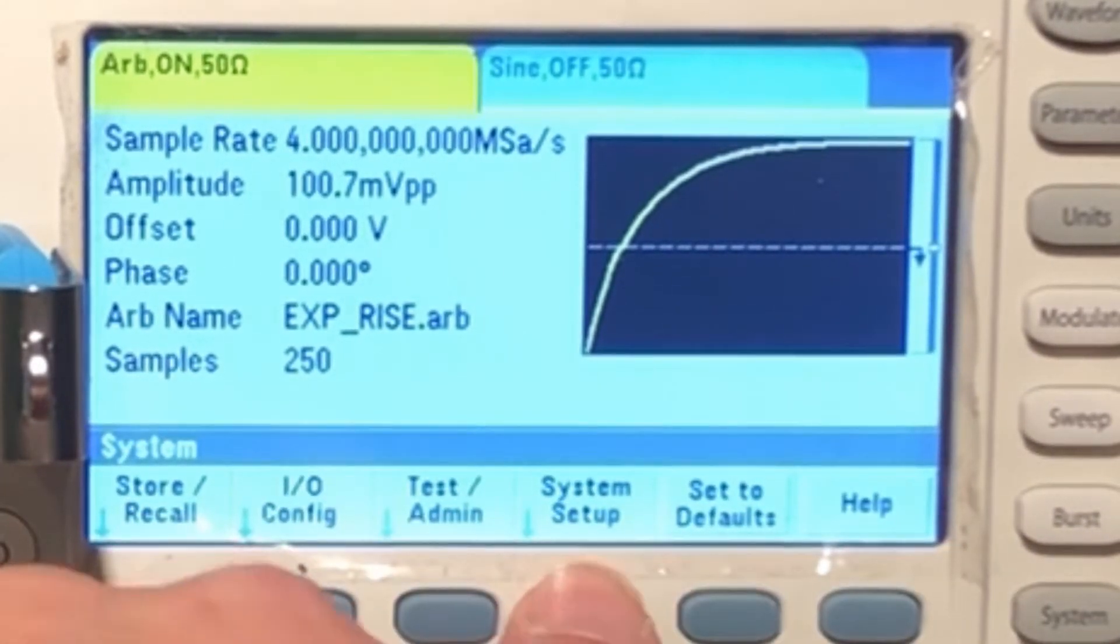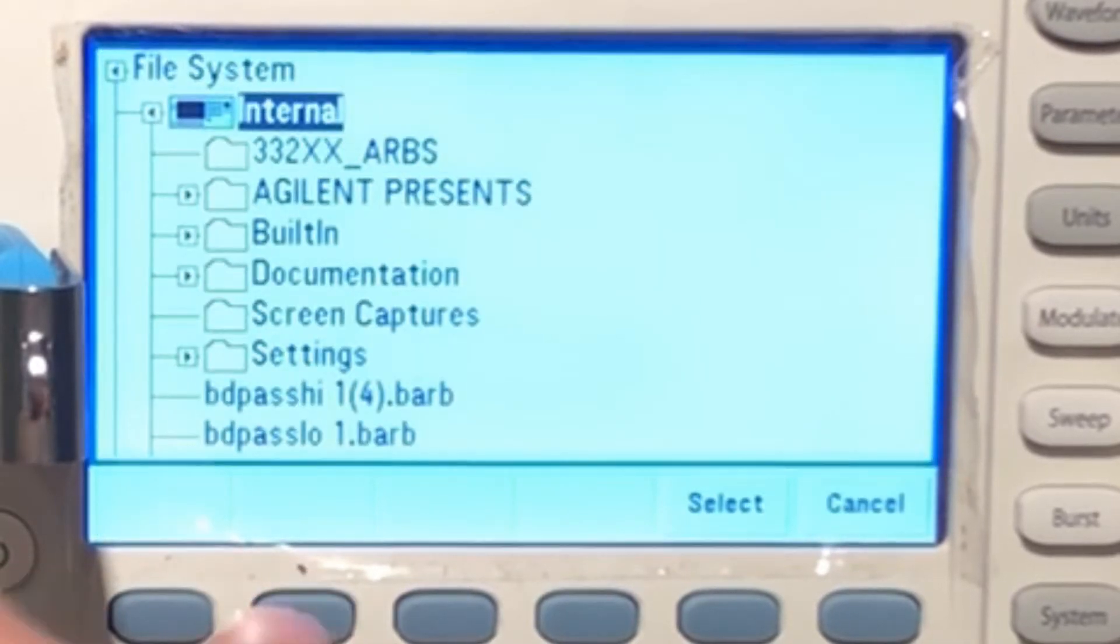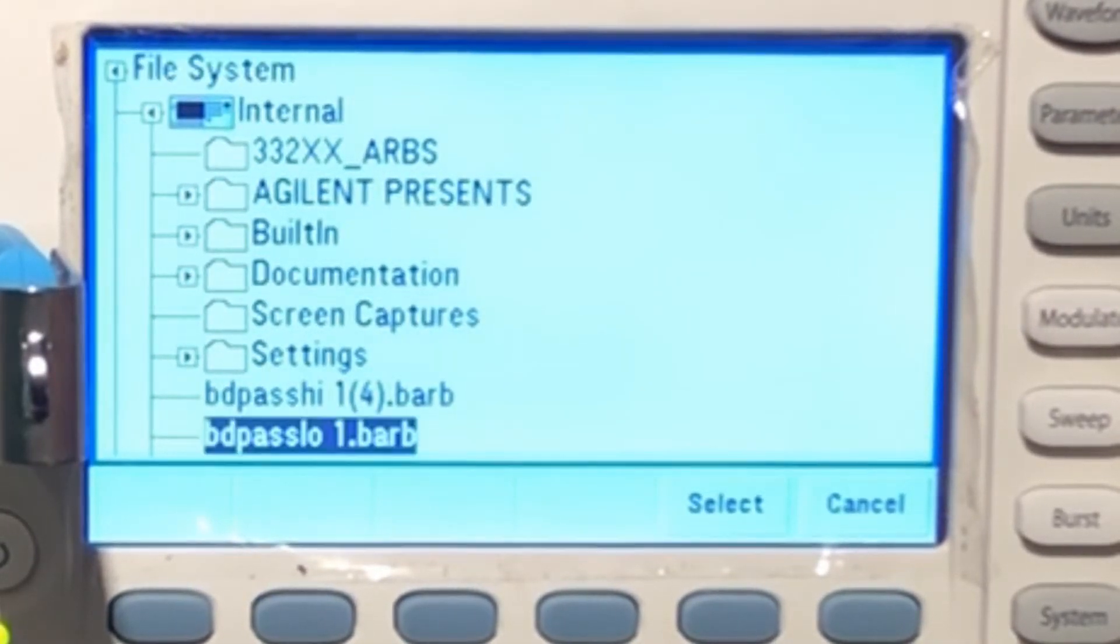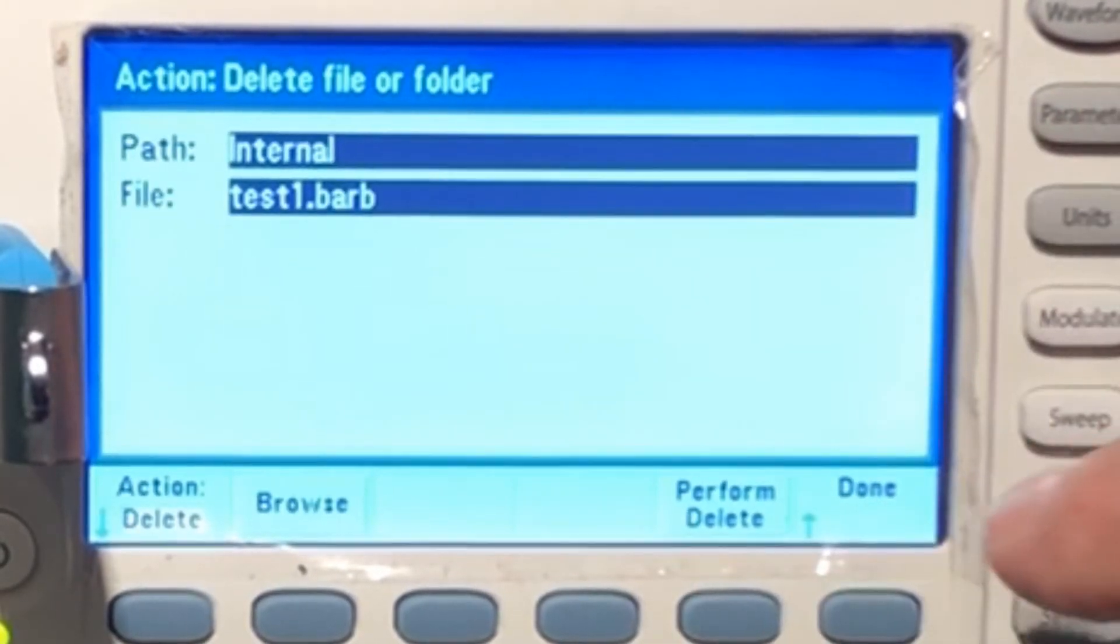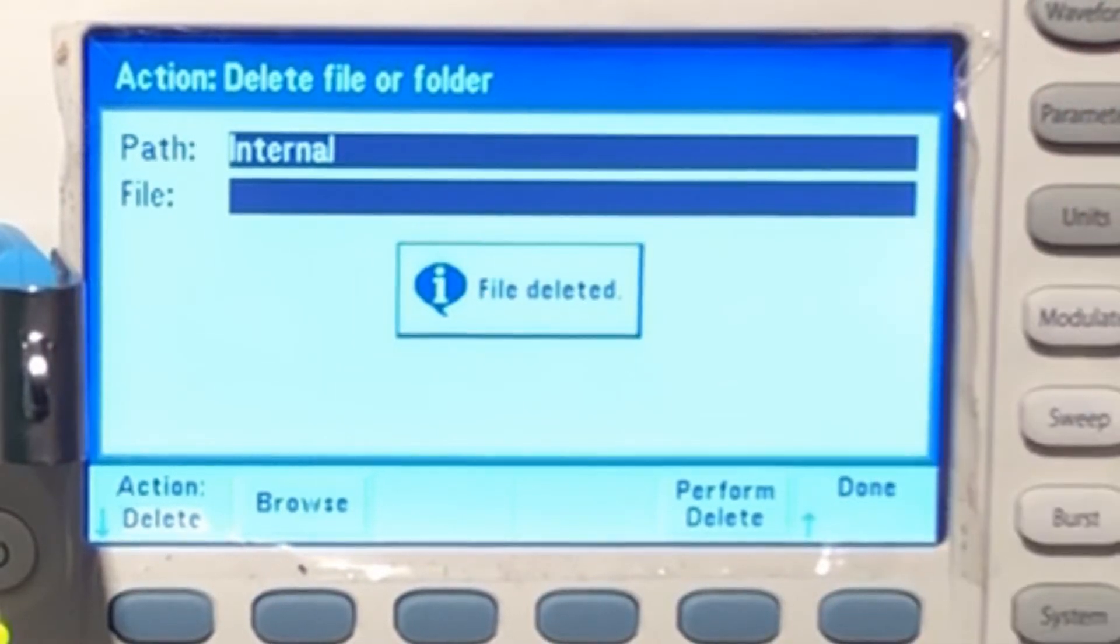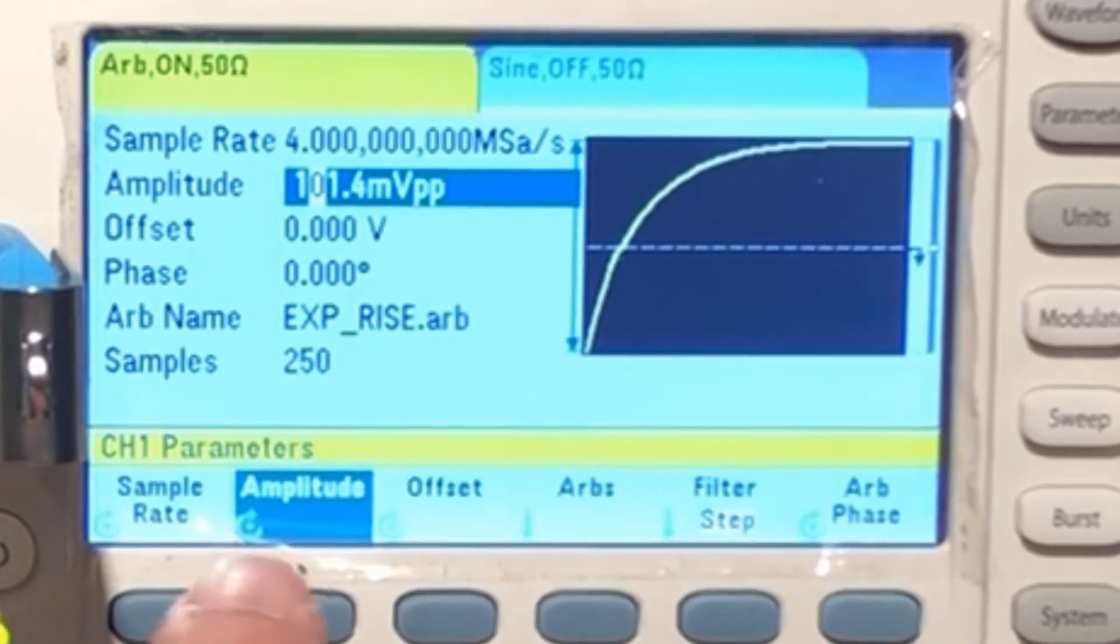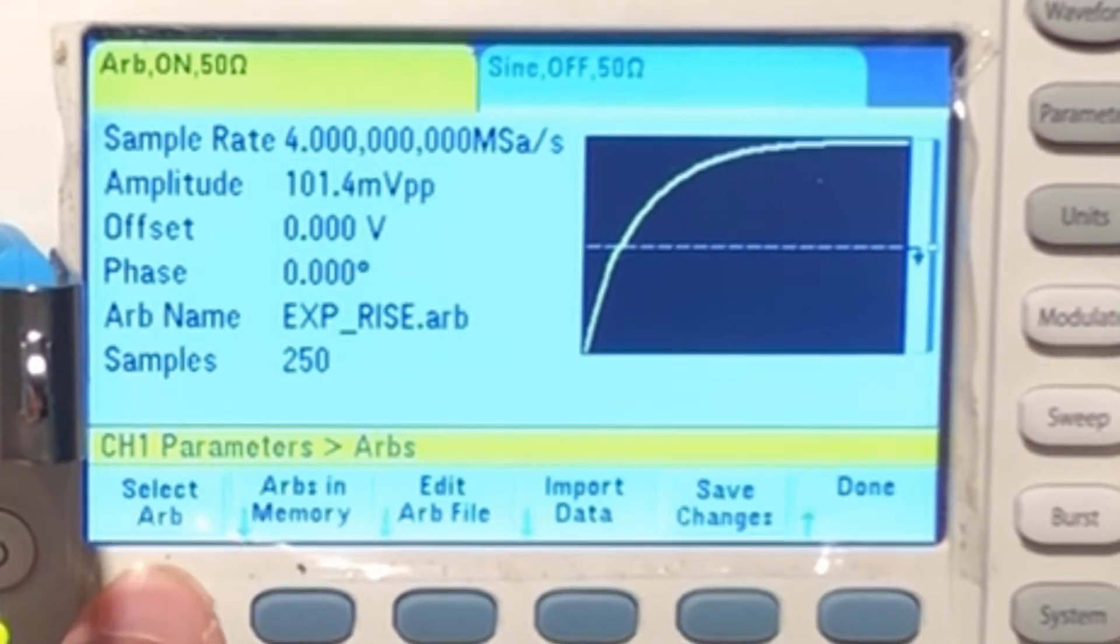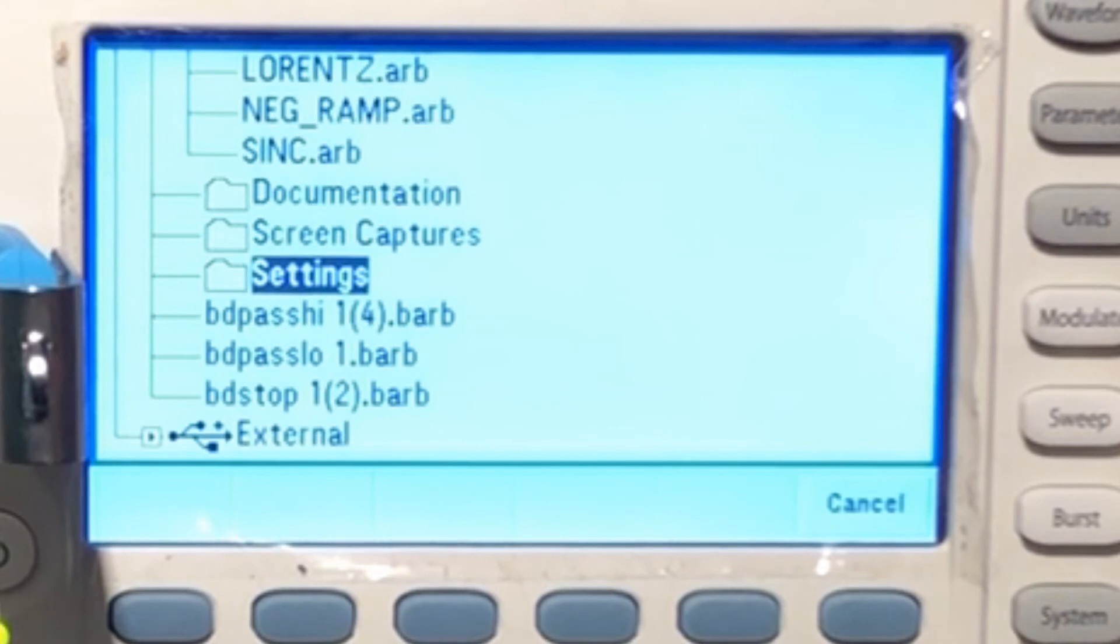So what we need to do is go into system, system setup, manage files. And then we're going to, we want to action copy, we want to delete and we want to browse. Now we can delete anything in here so we have to be careful when we do this. This will remove it completely from a choice that we have. Let's select that and then it's going to say perform delete, perform action. You could copy it whatever you want, but I'm going to do a delete. File deleted, done. Now if I go to arbs, waveform arb, arbs, select arb, and I go down for our choices, it's not there anymore. So it's completely gone from the system. And that's a little tricky to navigate, but that's how it's done.